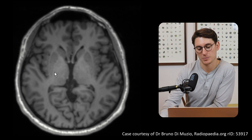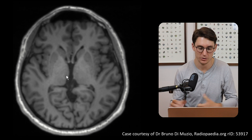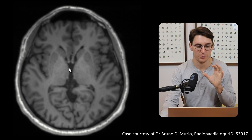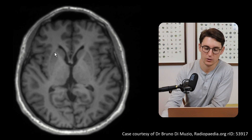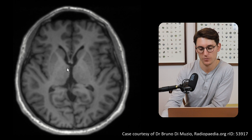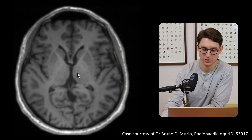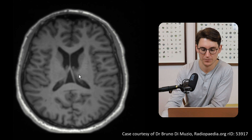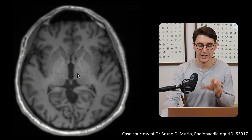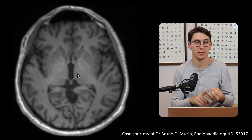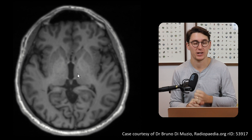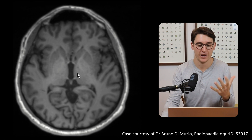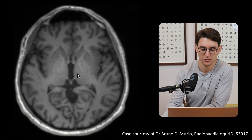The globus pallidus is separated into the globus pallidus externa and the globus pallidus interna, which we'll see better on coronal views. It is separated from the caudate by the anterior limb of the internal capsule, and from the thalamus by the posterior limb. So we've covered the caudate, the putamen, and the globus pallidus. The next two nuclei are the subthalamic nuclei and the substantia nigra — those five areas make up our basal nuclei.